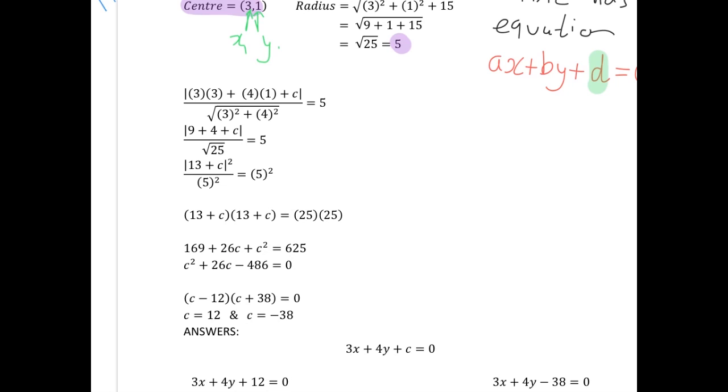Bringing our 625 across the equals gives us this equation here, and then we just have to factorize this equation, and we end up getting our two values for c, 12 and minus 38.